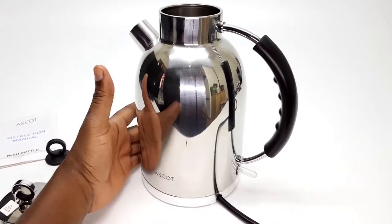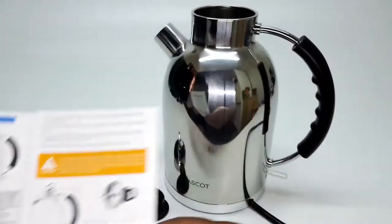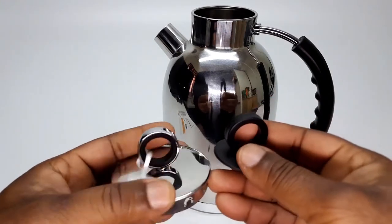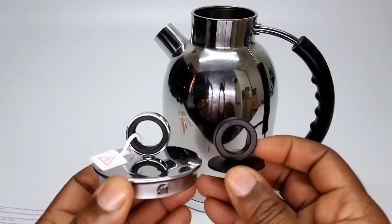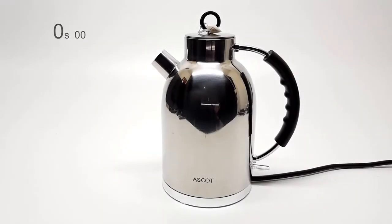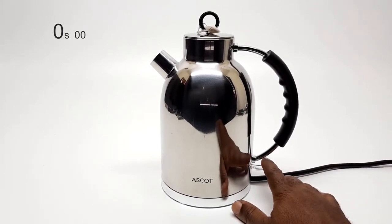In the instruction manual, it shows that you can interchange the handle on the lid to the plastic one if you so choose or tend to open the lid frequently after the water is boiled. However, this is not recommended, but it affords you the option to change it if you like. I will now test how long it takes for the kettle to boil 1.6 liters of water.